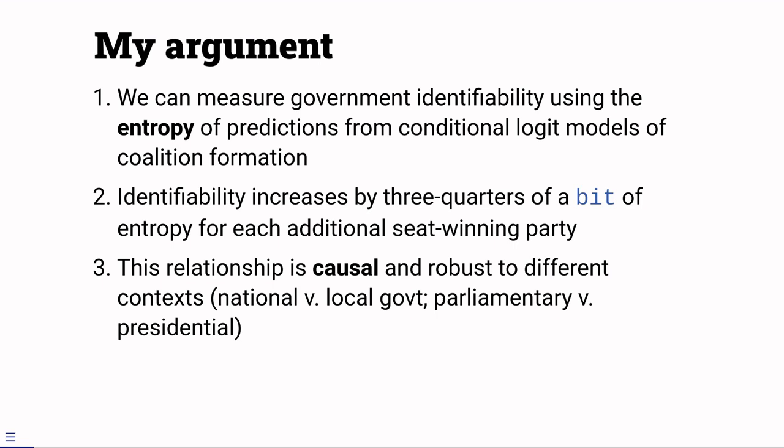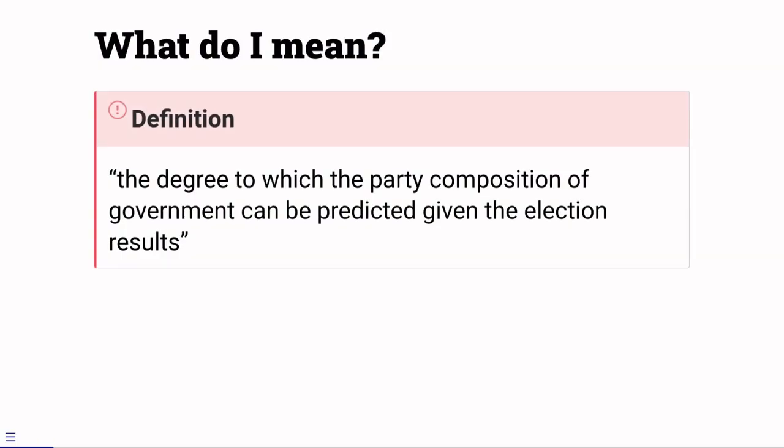But before I make those claims, I need to define one key term. By identifiability, I mean the degree to which the party composition of the government can be predicted given the election results. Some people argue identifiability is an important part of democracy. If we can't know the likely government once the voters have spoken, well, what power do voters really have?